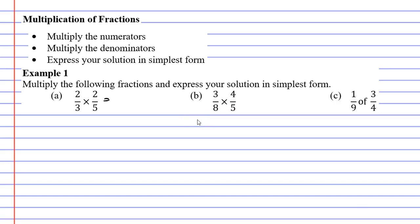Question A. If we multiply the numerators, 2 times 2 is 4, and for the denominators, 3 times 5 is 15. It's that simple.